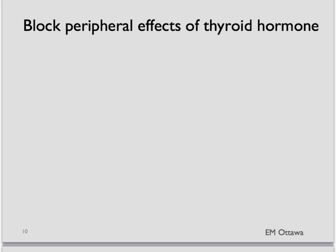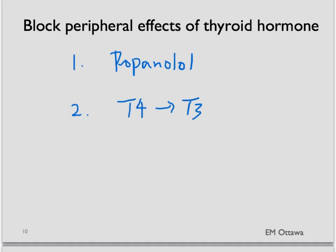The second part is to block the peripheral effects of the thyroid hormone. First, we treat the tachycardia with a beta blocker — the most often used is propranolol. Secondly, we try to inhibit the peripheral conversion of T4 to T3, since T3 is the active form. We do this by giving a dose of glucocorticoid steroids.